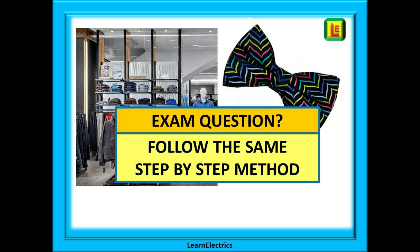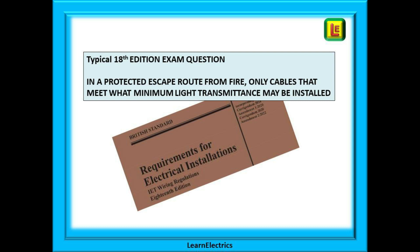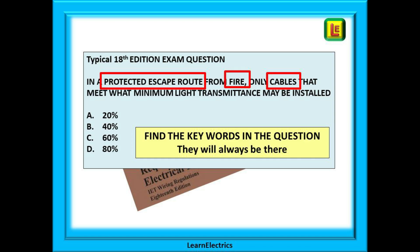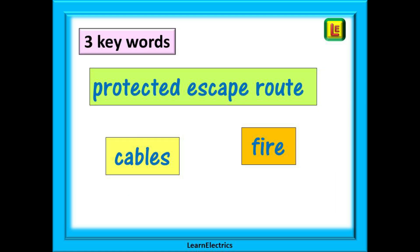So let's apply the same logic to answering an exam question. This is typical of the 18th Edition exam questions. The question is: in a protected escape route from fire, only cables that meet what minimum light transmittance may be installed? It's a multiple choice exam so the four options are 20%, 40%, 60%, or 80%. The exam question will always, always give you enough clues to find the answer. Look at the question again. What are the key words? It's a question about cables, it mentions protected escape routes, and it asks about light transmittance in a fire. We now have some key words.